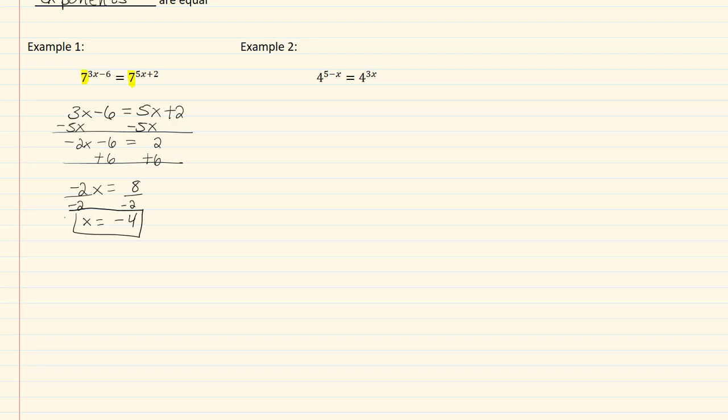Let's take a look at example two. Again, in this particular case, my bases are the same, so that means that I can set my exponents equal to each other. So I have five minus x equal to three x.